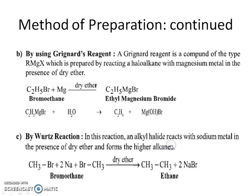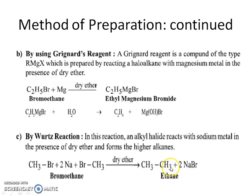Alkanes can also be produced using the Grignard reagent, which is also known as an organometallic compound. By hydrolysis of the Grignard reagent, alkanes are formed. By the Wurtz reaction, higher alkanes are formed in the presence of sodium metal and a haloalkane.